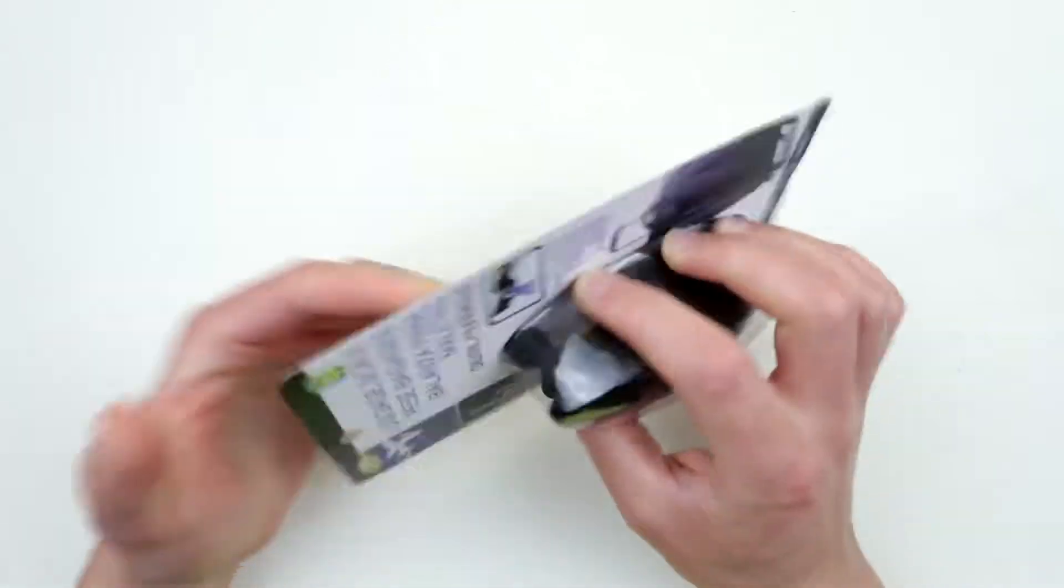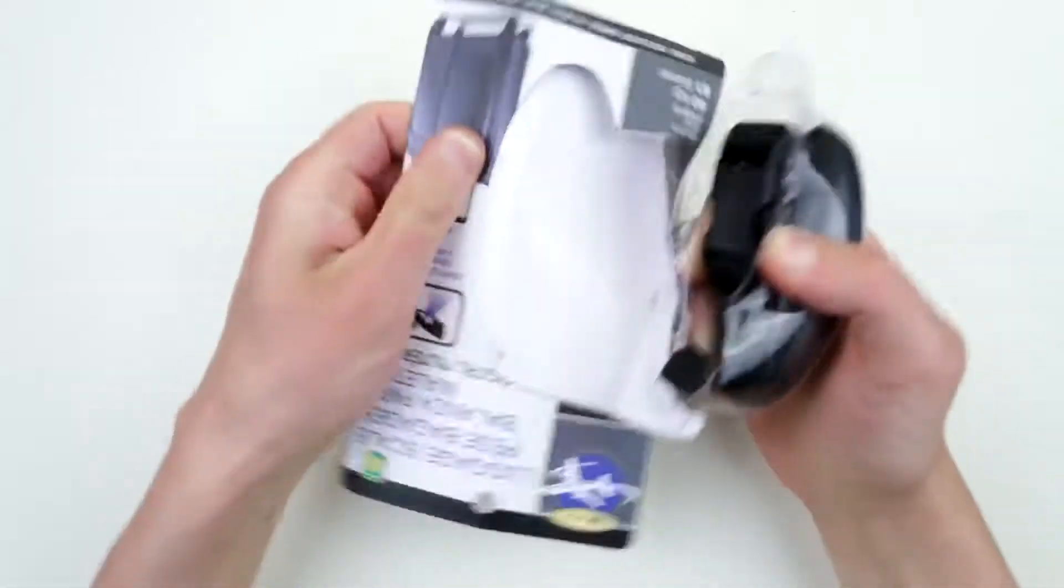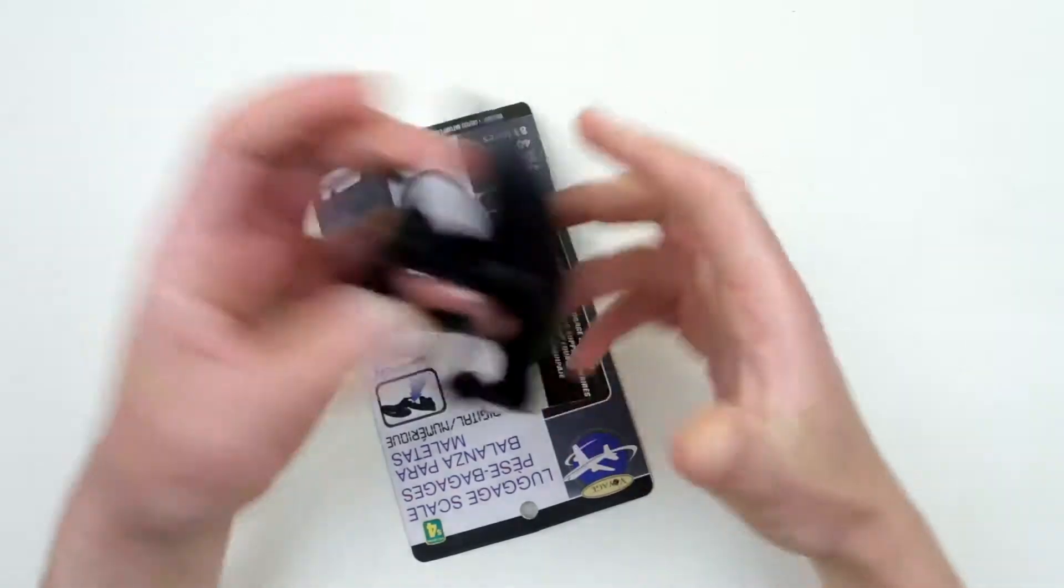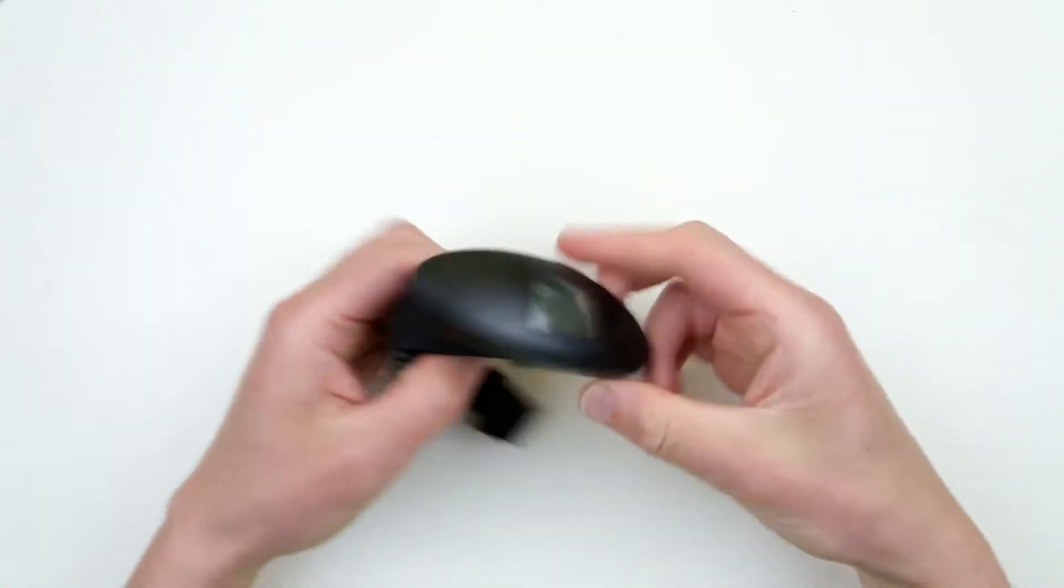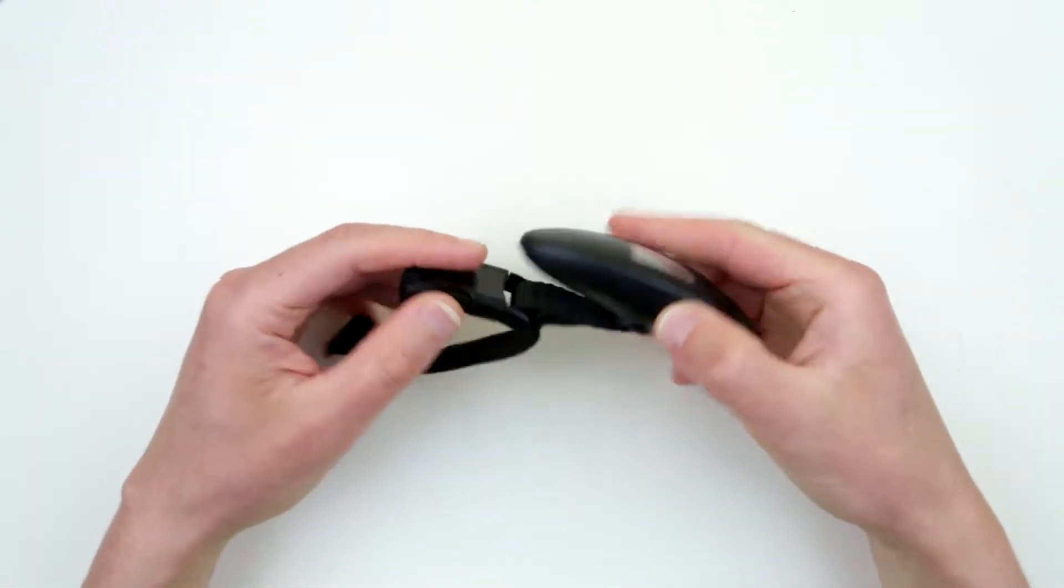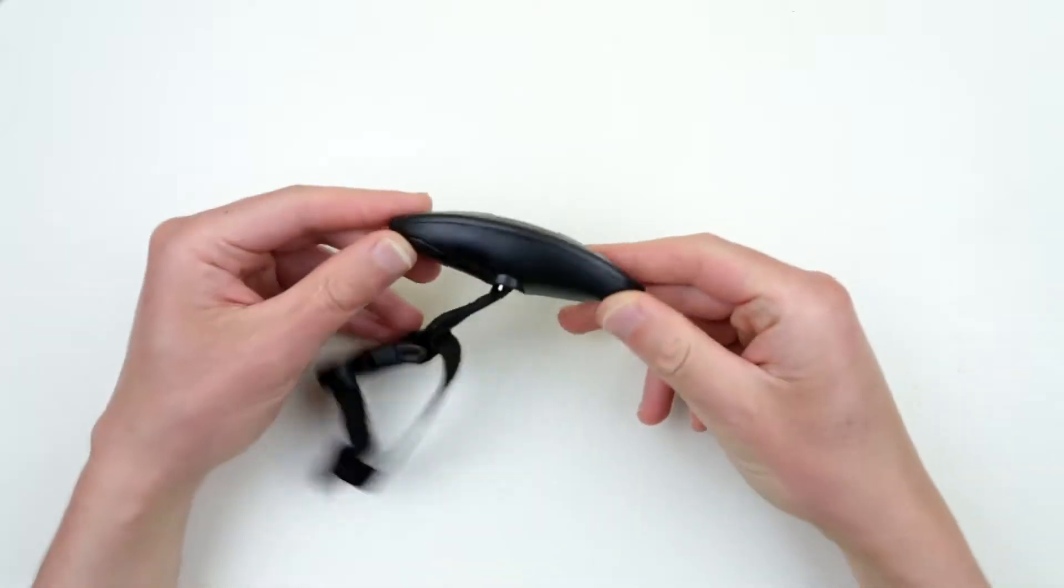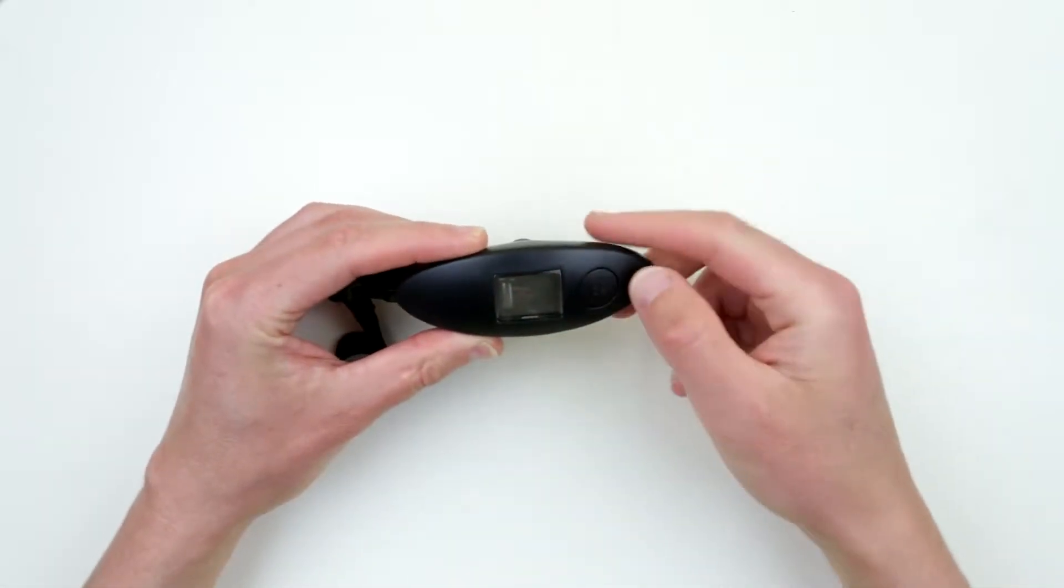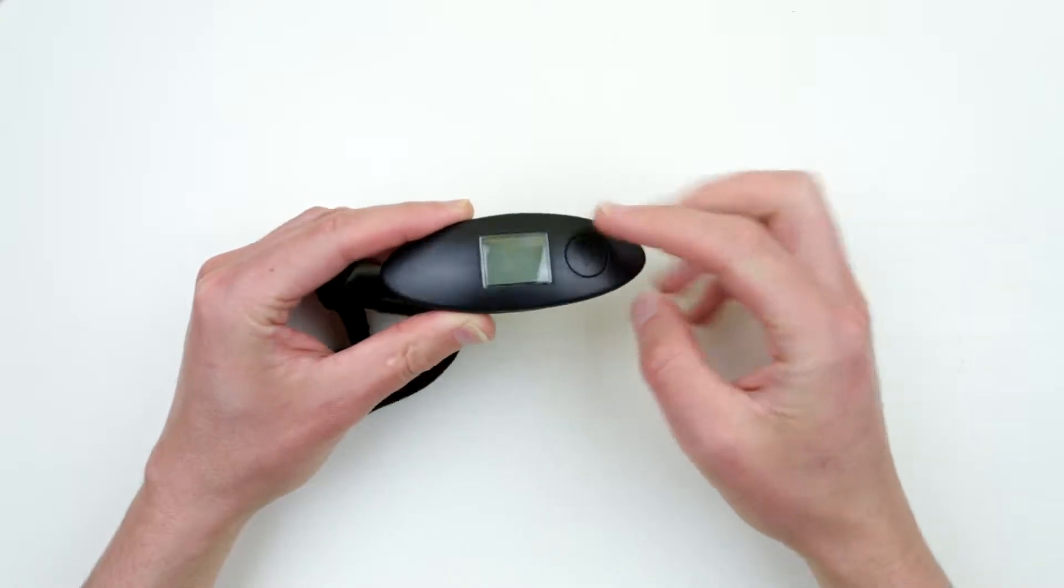Here it is. On top it has the screen, it has an on/off button, and I assume this is the battery compartment over here.